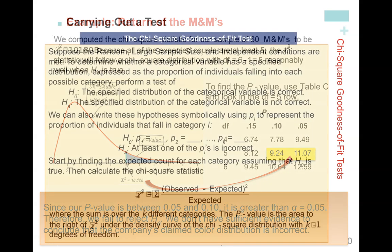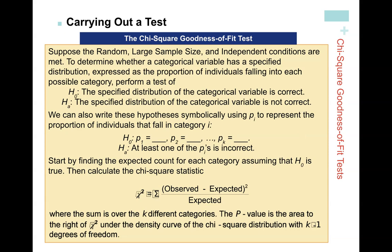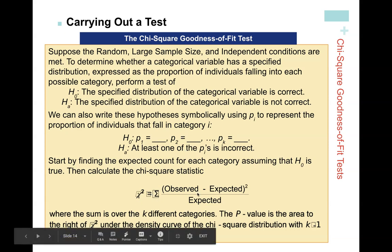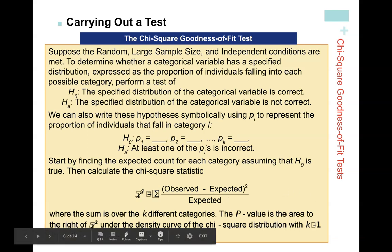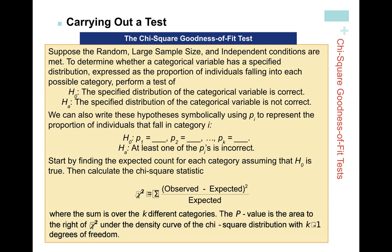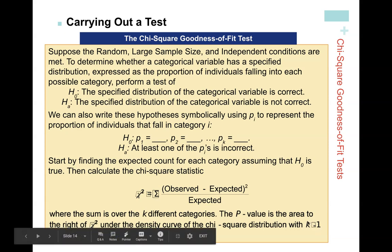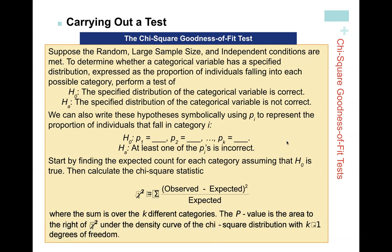That's our p-value of about 0.07. To summarize what you need to do: write your two hypotheses correctly, calculate and show the chi-square formula starting with the generalized form, then show the first component, dot dot dot, and the last component. Use technology to get the actual chi-square value. You must also write the degrees of freedom: df = k − 1, so for M&Ms it's 6 − 1 = 5.